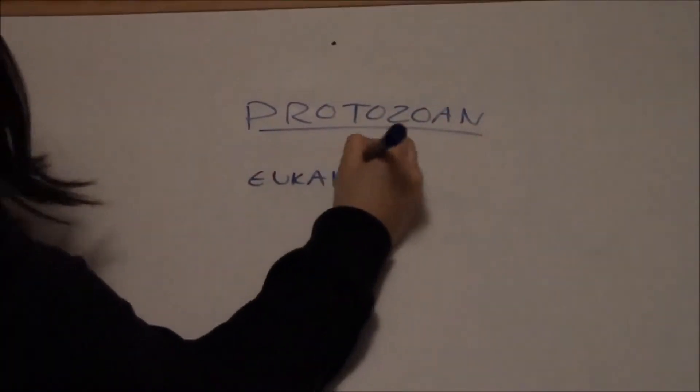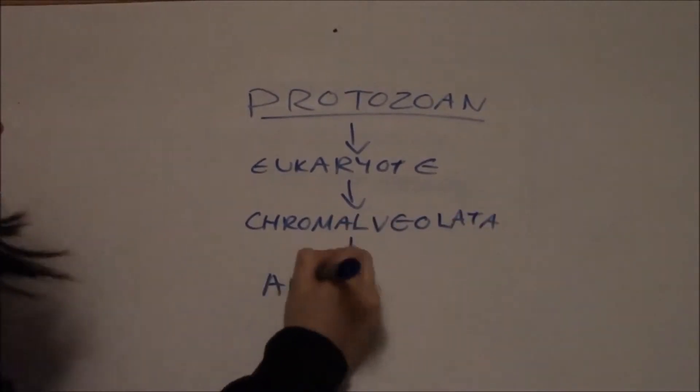Hi, my name is Plasmodium falciparum. I am a protozoan, which is a unicellular eukaryotic organism of the phylum Apicomplexa of the supergroup Chromalveolata. What do I do? Cause malaria!